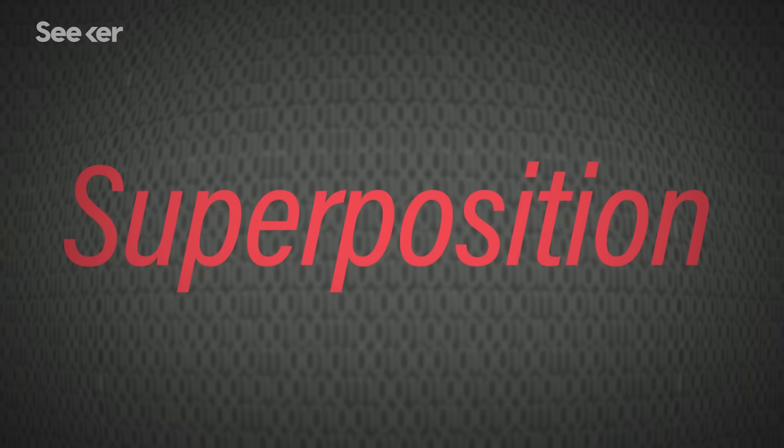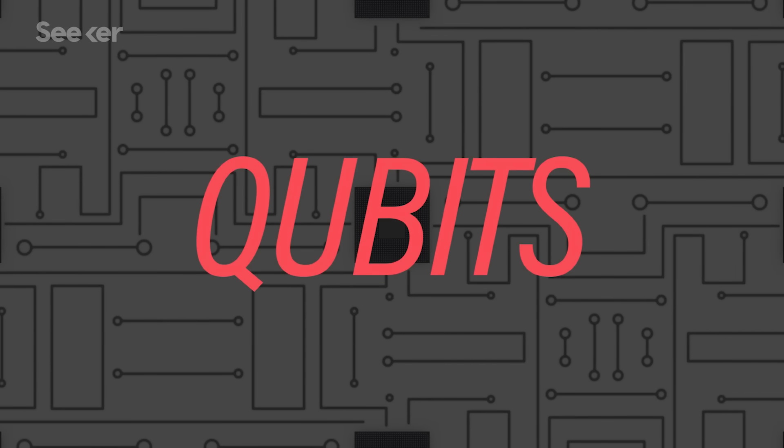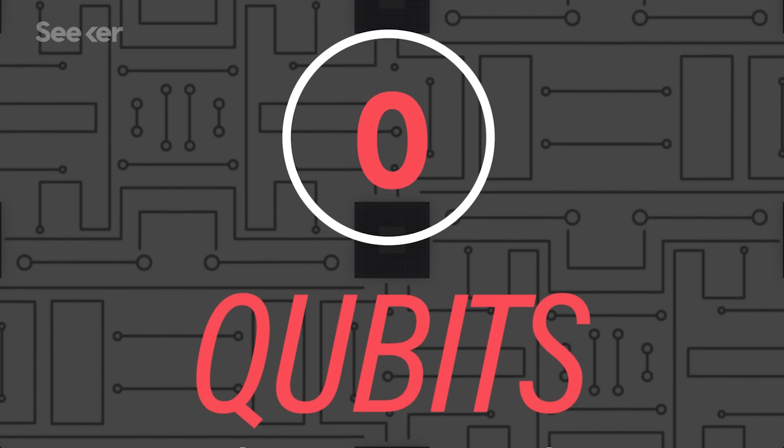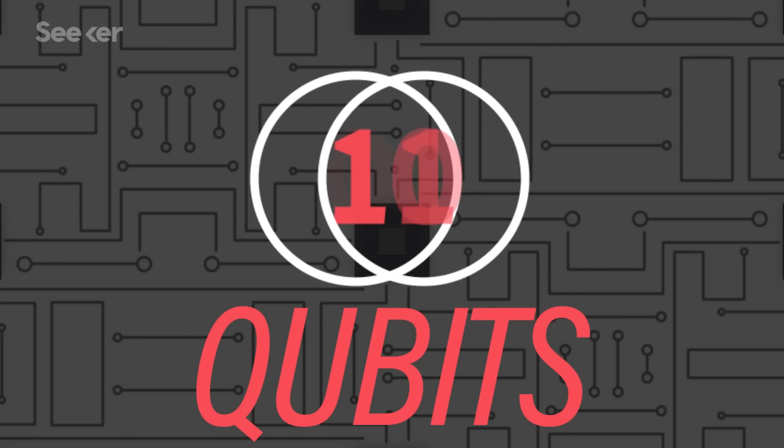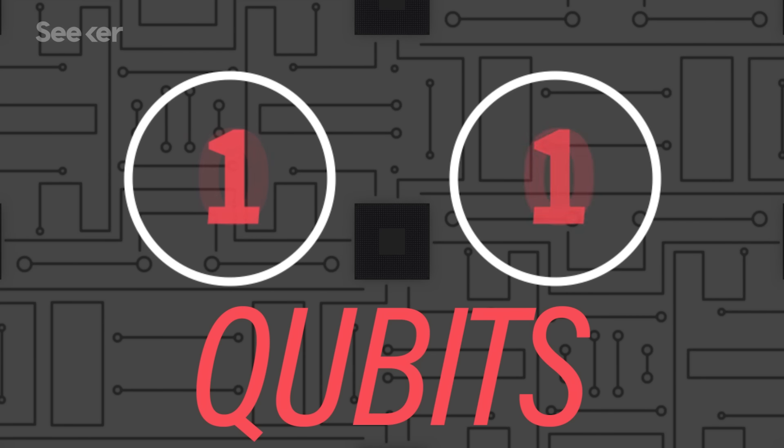But with superposition, quantum computers can do things differently. Instead of using these bits, these zero or ones, we use what's called qubits, which are quantum bits. And these bits, instead of being a zero or a one, can be any combination of a zero and a one. This is something that arises because of quantum mechanics and allows us to do more tricks.